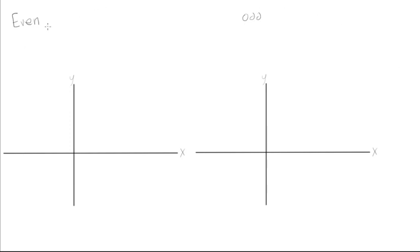So an even function is, the way you define it is, if you have f of negative x, this is the same as f of x. And what does that mean? Well, that means that this graph would be symmetrical about the y-axis.